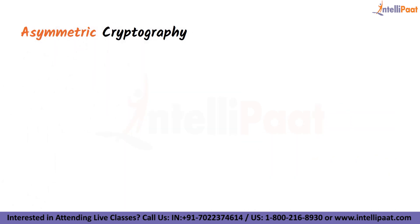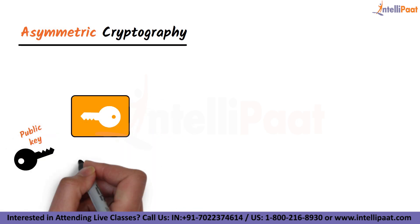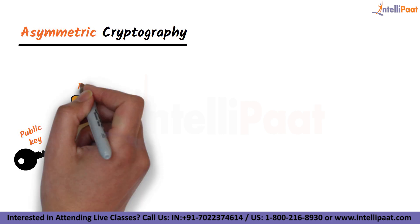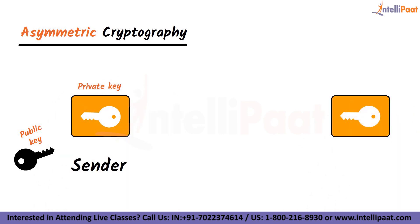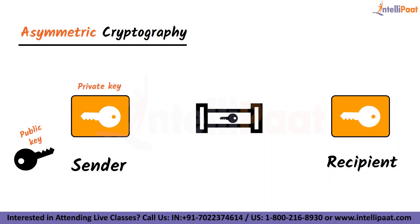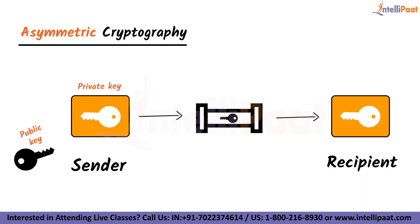Asymmetric cryptography uses two separate keys for encryption and decryption. In an asymmetric cryptosystem, a public key can be used by a person to encrypt a message so that it can only be decrypted by the intended recipient with their private key. A private key is shared only with the key's initiator.